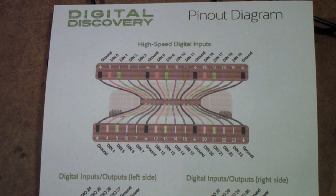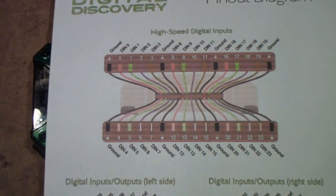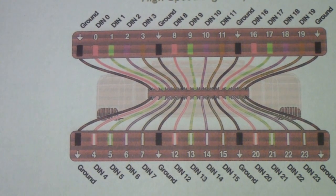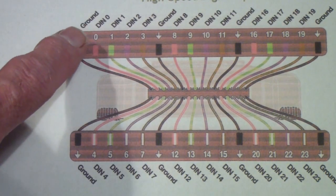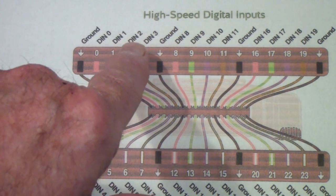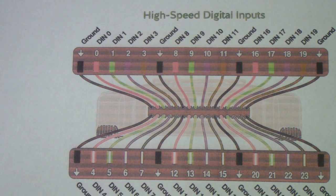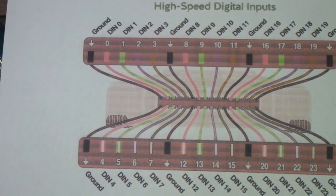The Digital Discovery has only digital inputs and outputs, generally working at 3.3 volts, though you can use lower voltages and set thresholds down to about 1.4 volts. Instead of analog scope inputs and arbitrary waveform generator outputs, it has data inputs: data in zero, data in one, data in two, data in three, data in four, and so on. That's one of the big differences between the two.